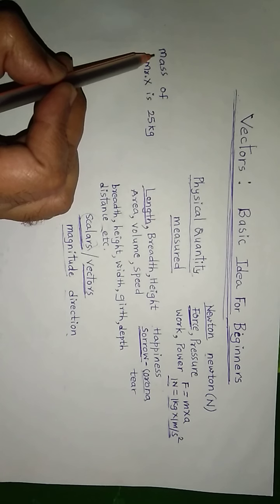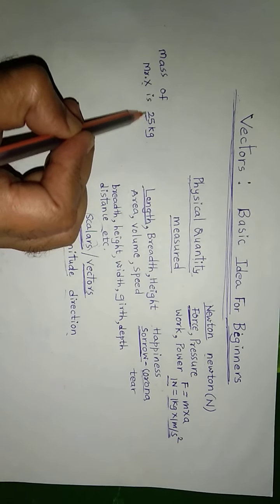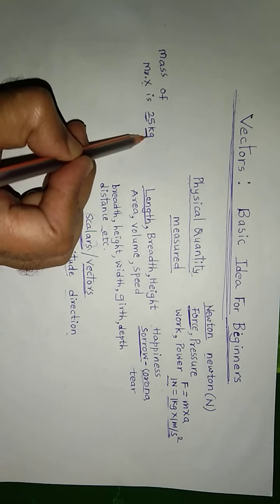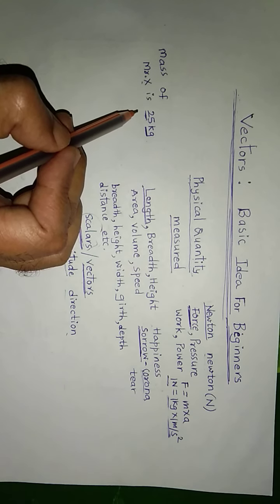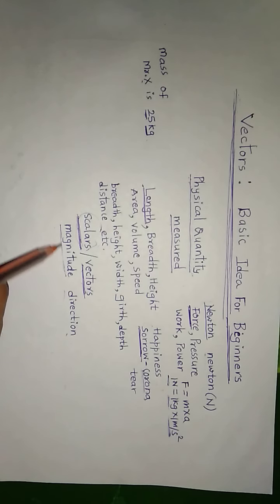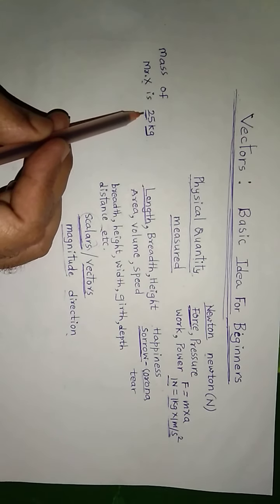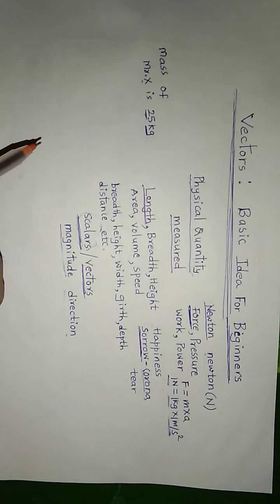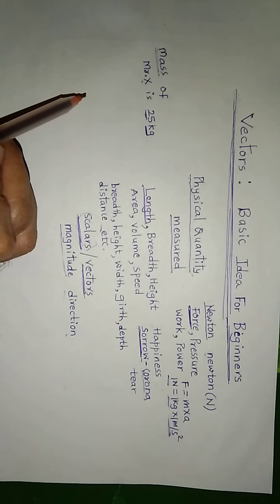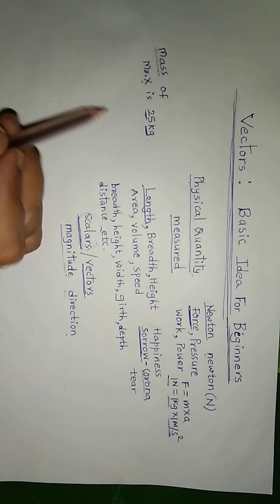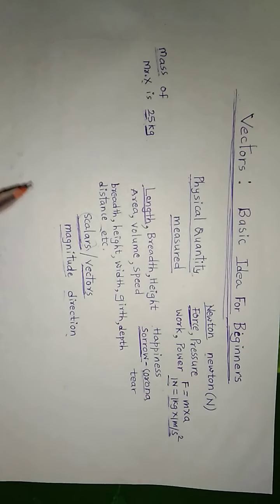For example, mass of Mr. X is 25 kilograms — here 25 is a number and kilogram is a unit; number and unit together make magnitude. The physical quantity named mass can be completely described by magnitude alone, so mass is regarded as a scalar.